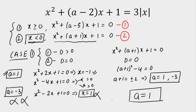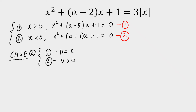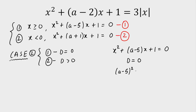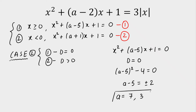Now let's calculate from Case 2 the value of A. In Case 2, the first equation gives only one real root and the second equation gives two distinct real roots. Setting D equals 0 for the first equation X squared plus (A minus 5) times X plus 1 equals 0, we get (A minus 5) squared minus 4 equals 0. Taking square roots, A minus 5 equals plus or minus 2, giving A equals 7 or A equals 3.